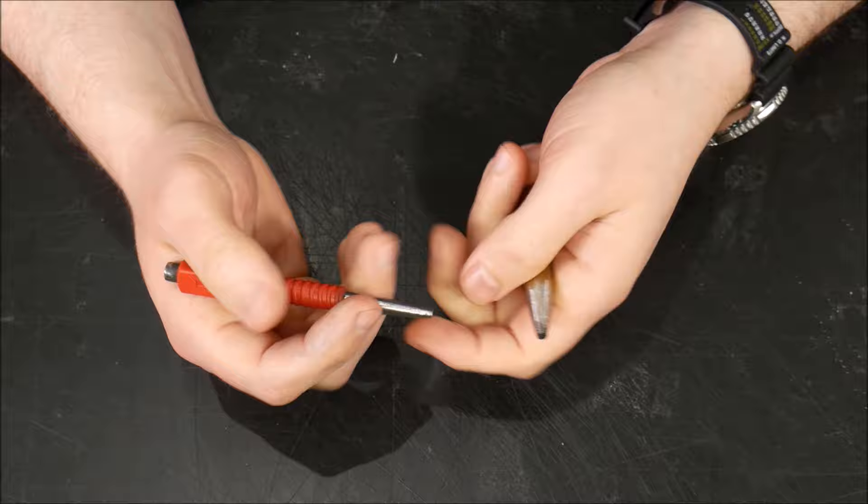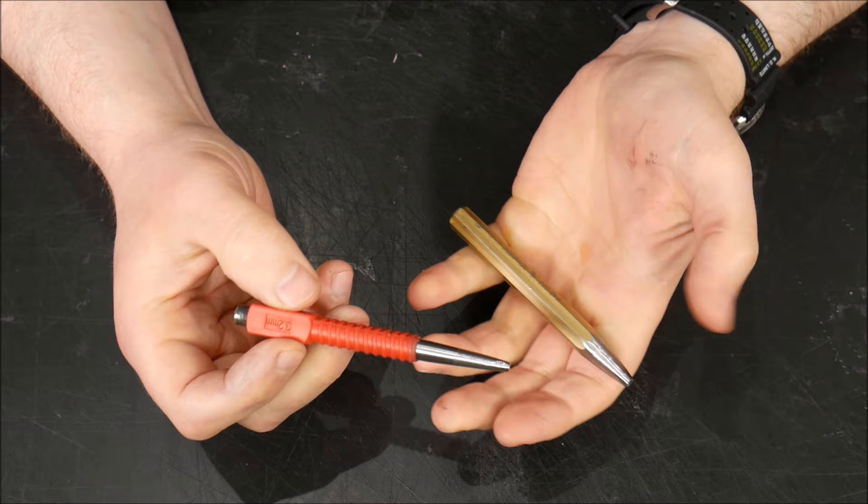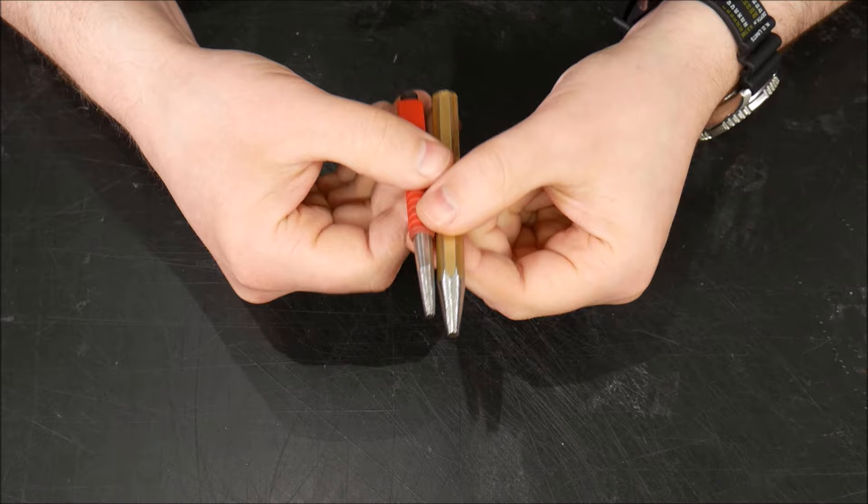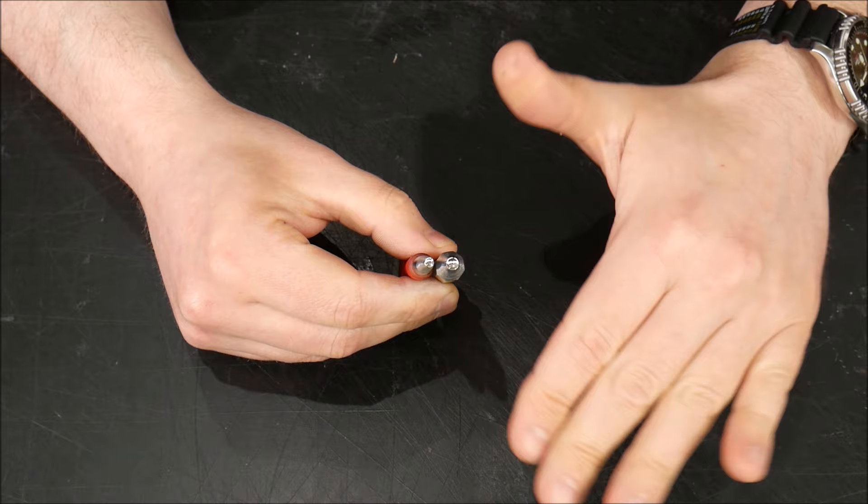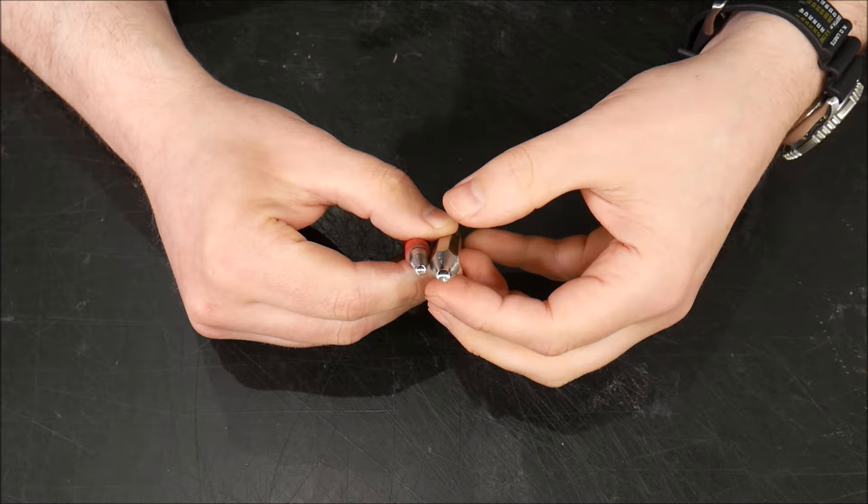We're going to be modifying a nail setter into a rivet setter, and the main difference is the ends. As you can see, they're nicely domed, perfectly domed, and they're also highly reflective because they're polished.